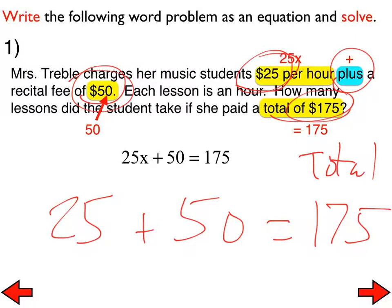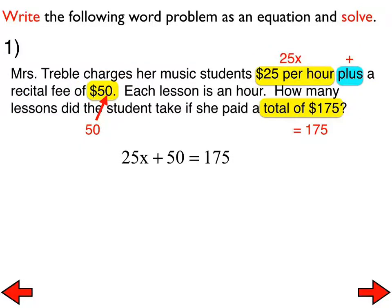In this problem, we are trying to find how many lessons. Lessons represent hours. So which part takes care of the lessons? The $25 part or the $50 part? The $25. That's another key indicator that the x has to go with the $25. Another key indicator is the $25 per hour. We'll see that word per or each a lot on the part that the variable has to go with. All right, so at this point, the solving part is super easy. Let's subtract 50 from both sides.